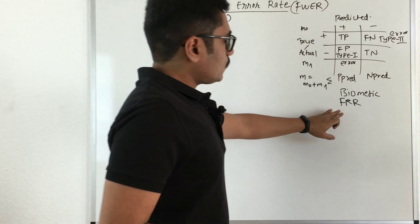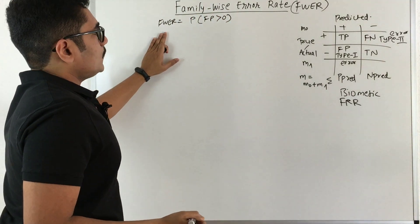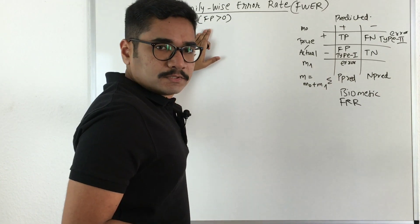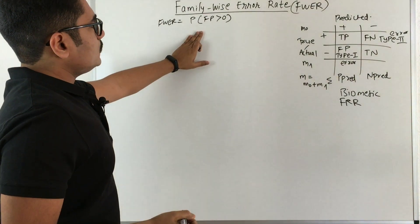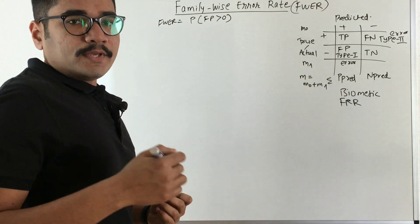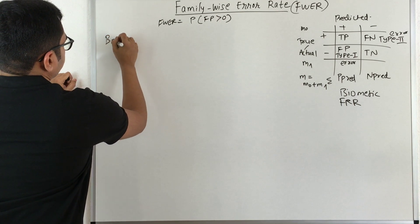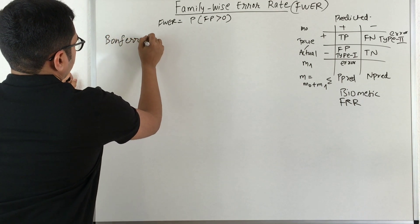Now we need to control this. So FWER is essentially the probability of having the false positive greater than 0. So this is very much undesirable. So in order to control this, we have certain measures. So that measure is called Bonferroni correction.